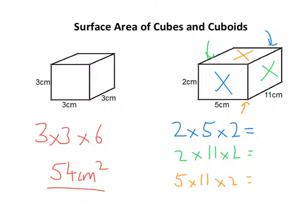Two times five times two is twenty. I must try and keep my color coordination. That's my OCD kicking in again there. That would be twenty centimeters squared. Two times eleven times two is forty-four centimeters squared. And finally, five times eleven times two would be a hundred and ten centimeters squared.